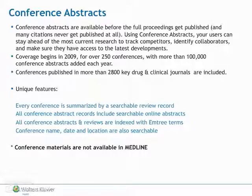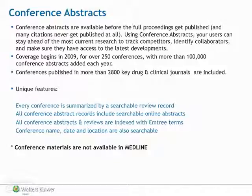Conference Abstracts are available before the full proceedings get published, and many citations never get published at all. Using Conference Abstracts, users can stay ahead of the most current research to track competitors, identify collaborators, and make sure they have access to the latest developments. Conference coverage begins in 2009 for over 250 conferences, with more than 100,000 conferences added each year. Conferences published in more than 2,800 key drug and clinical journals are included.